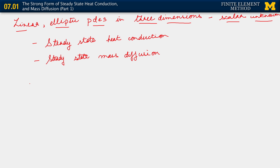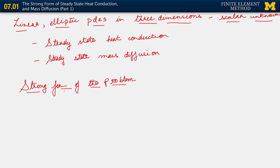We'll start out with the strong form. Before I write it out, let me sketch the domain we're trying to solve things on. Just as for the 1D linear elliptic problem, where we sketched out a bar fixed in a wall, I'll do something similar now.